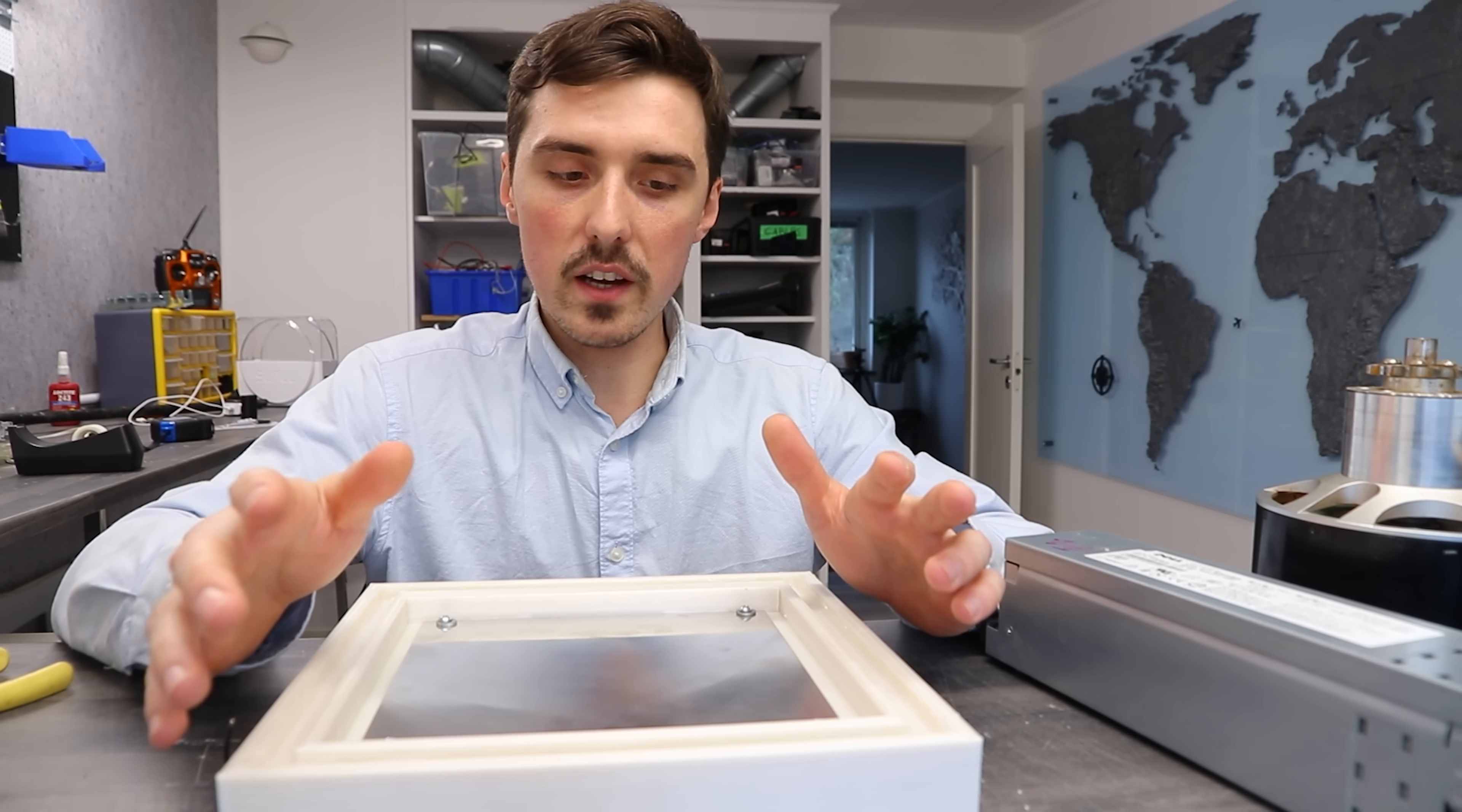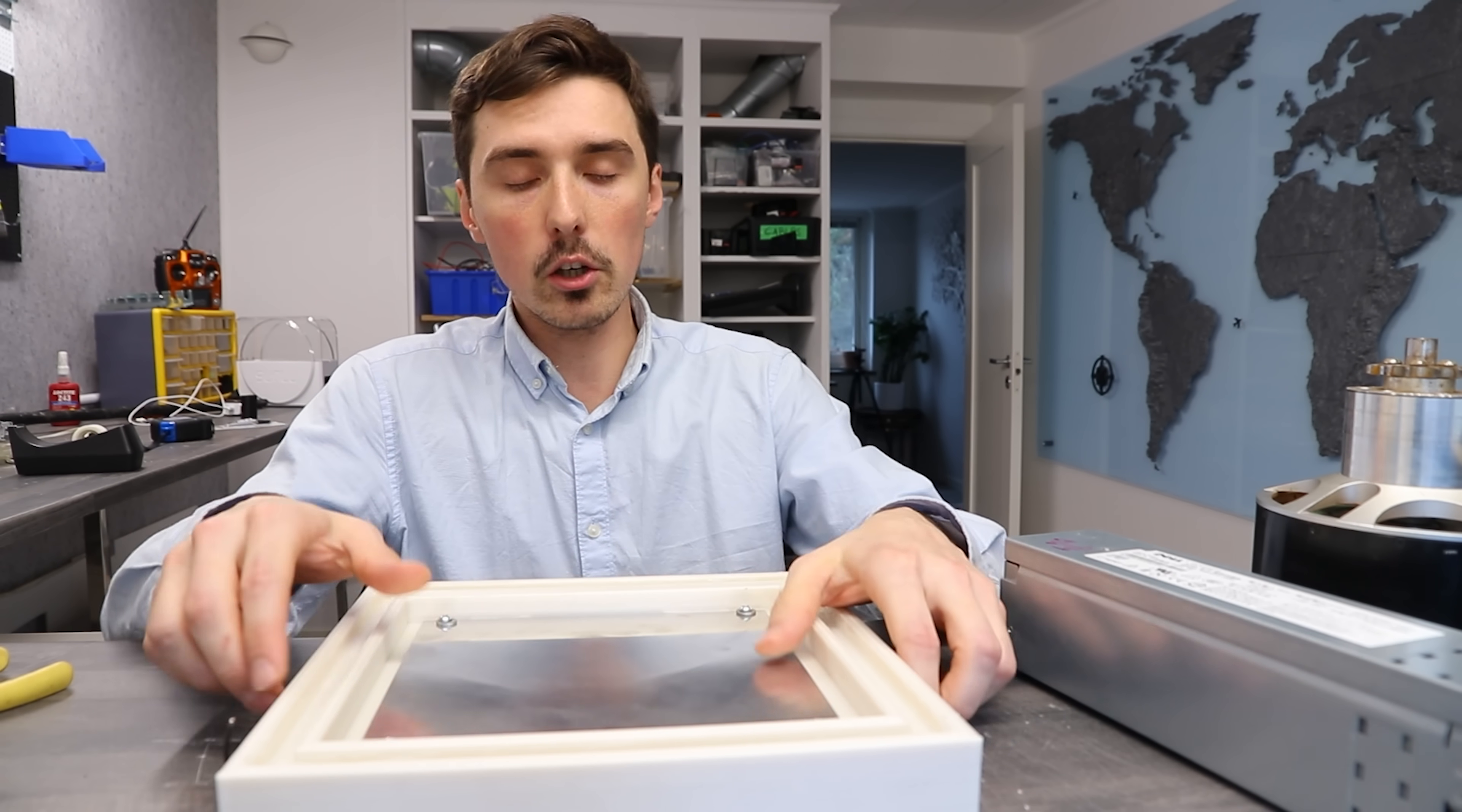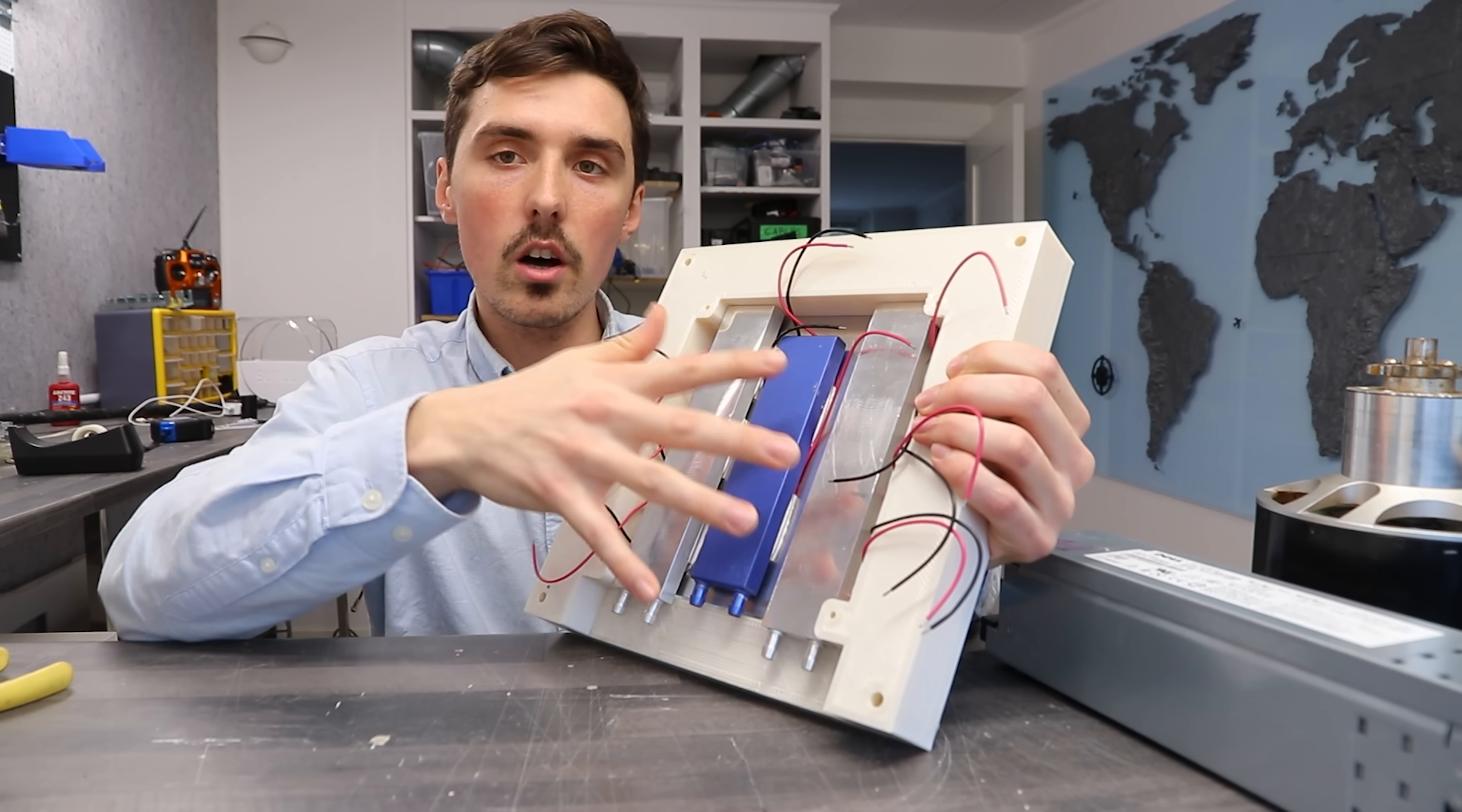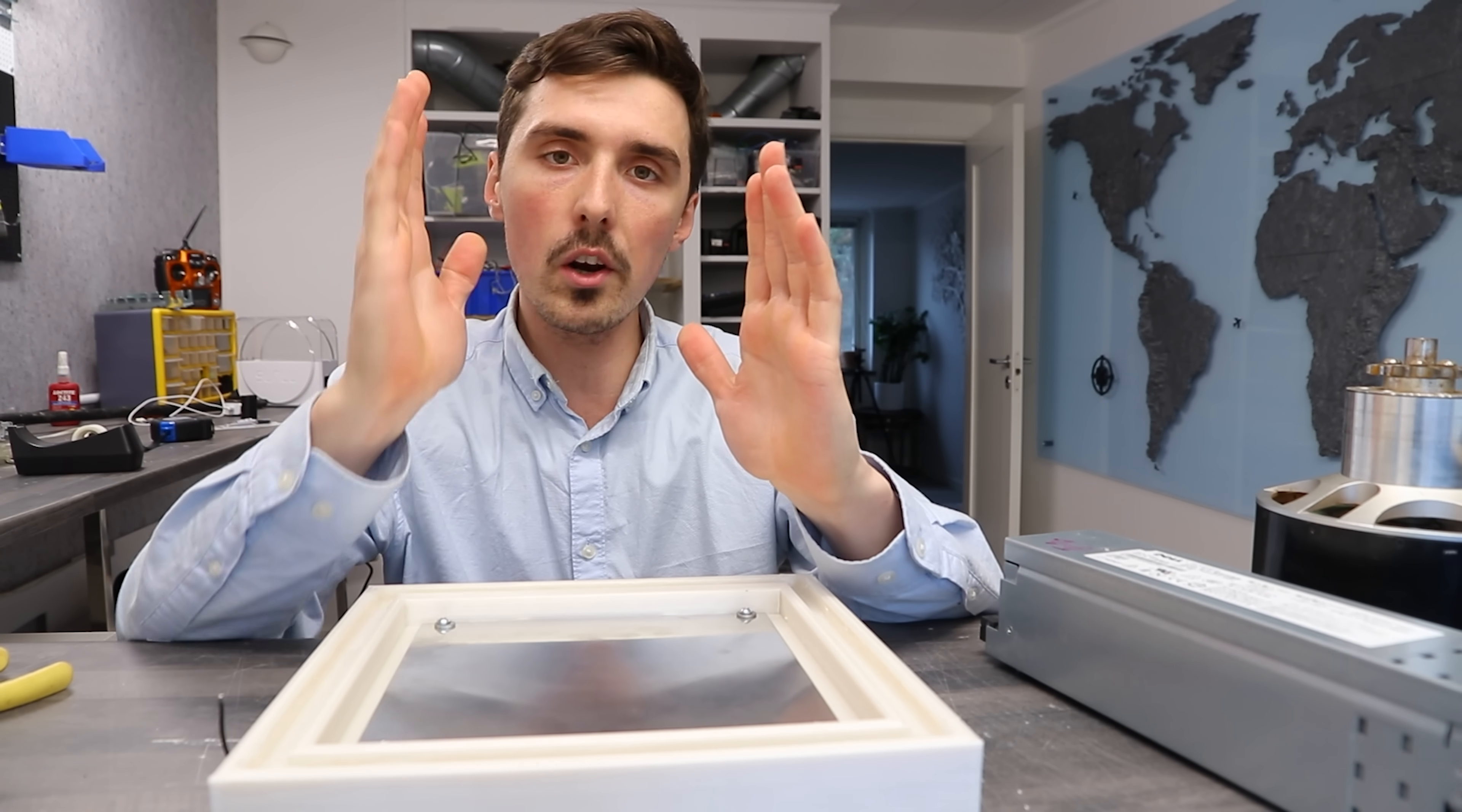For the cloud chamber effect to work, you have to reach as low temperature as possible on this aluminum piece, the cold side, by removing as much heat as possible from the water blocks, the hot side. If you don't know, thermoelectric coolers have two sides, one hot and one cold.